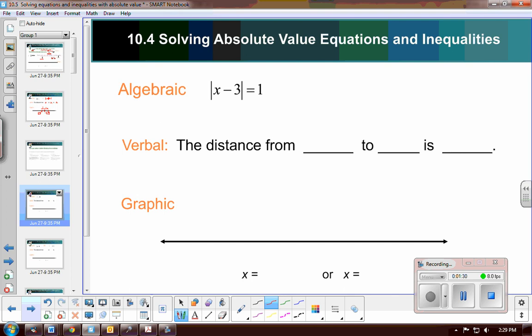Here we have the absolute value of x minus 3 equals 1. Well again, this would be described as the distance from 3 to x, or from 3 to my solution, is 1 unit. So I would start at 3, and the distance from 3 to my solution is 1 unit. So I'm going to move 1 to the right, 1 to the left, and so I'm going to have a result of 4 and 2. Those would be my two solutions to this problem.